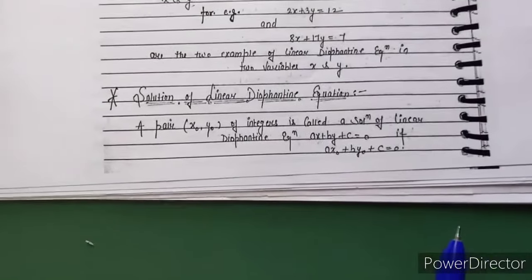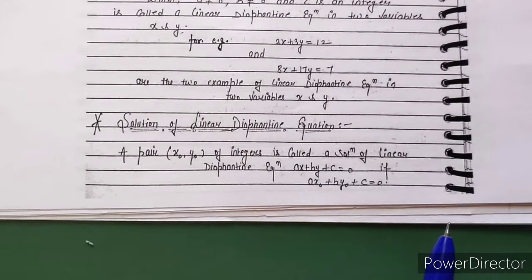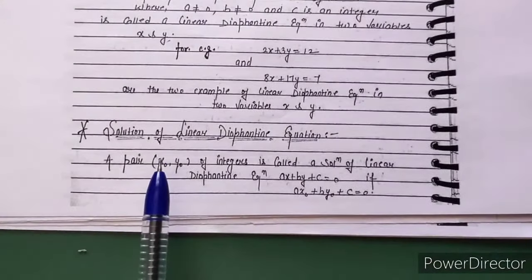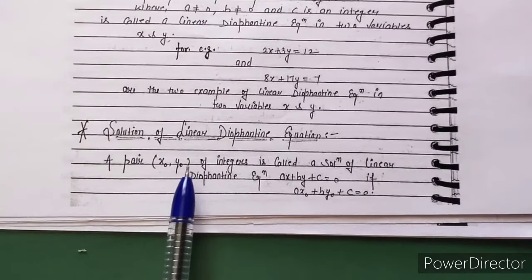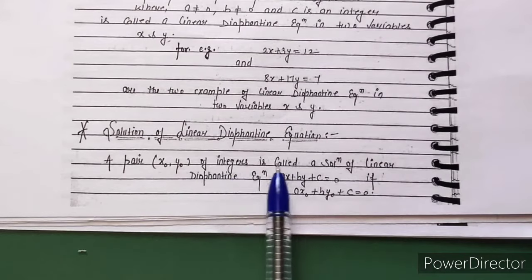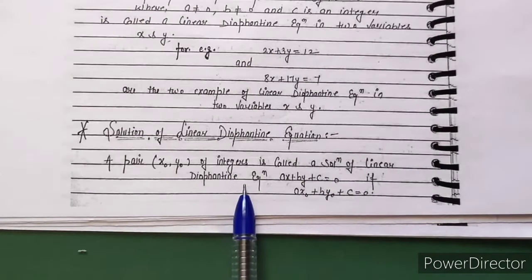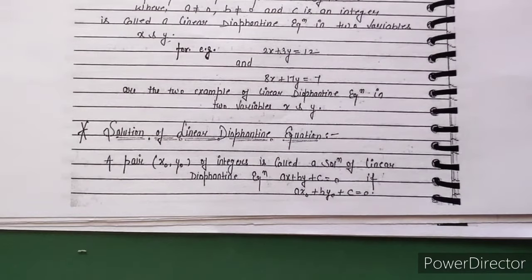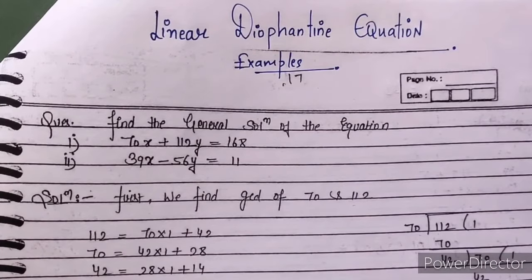If we talk about the solution of a linear Diophantine equation, we consider a pair of integers x₀ and y₀. This pair is called a solution of the linear Diophantine equation. When you put these values into the equation, the solution satisfies the equation.